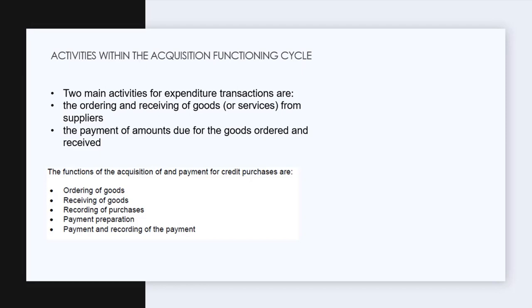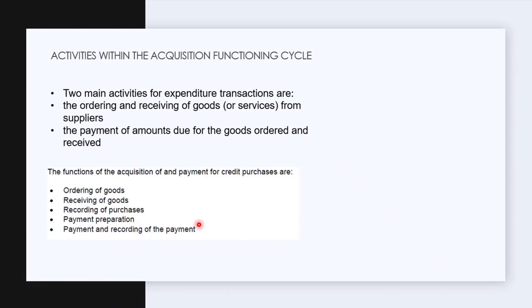The functions within the cycle, for a credit purchase where you'd have a payable at the end of the day, are: ordering of goods, receiving of those goods, recording the purchases made, preparing for the payment, and then paying and recording that the payment was made. These are the top five things that revolve around the acquisition cycle.